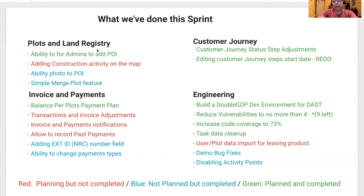For Customer Journey, we worked on a few status step adjustments, which merely was renaming certain steps, removing steps, and adding new steps. We also worked on editing Customer Journey steps start date. However, we have to revisit this story as some of the exception criteria were not clear and was done improperly.